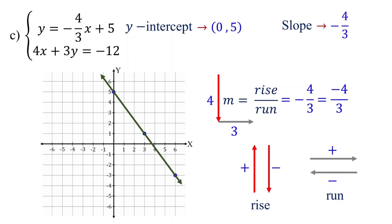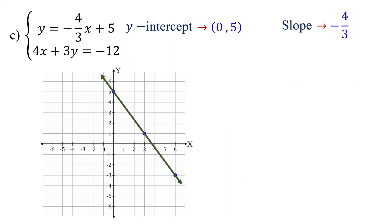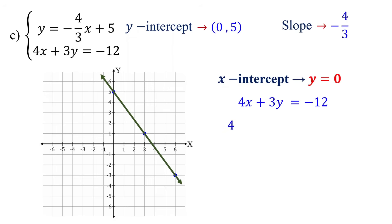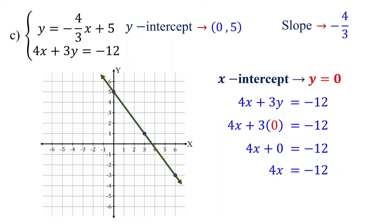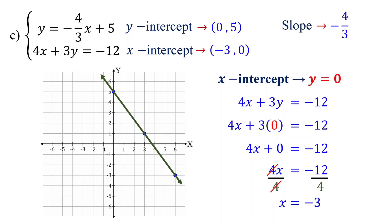Now, let's move on to graphing the second equation using the intercept method. First, let's find the x-intercept. Set y to 0 and solve for x. 3 times 0 equals 0, so we are left with 4x equals negative 12. Dividing both sides of the equation by 4, we get x equals negative 3. So, the x-intercept is (-3, 0).